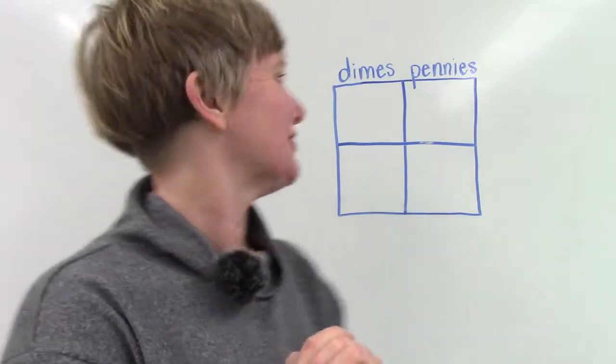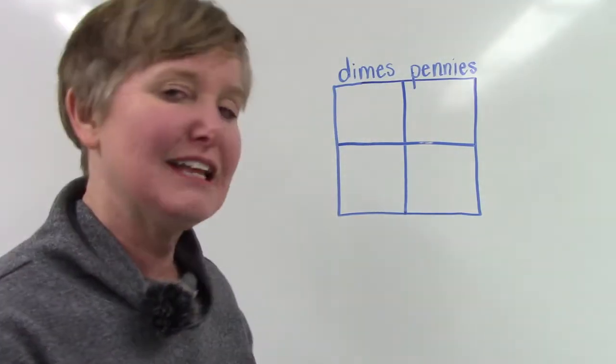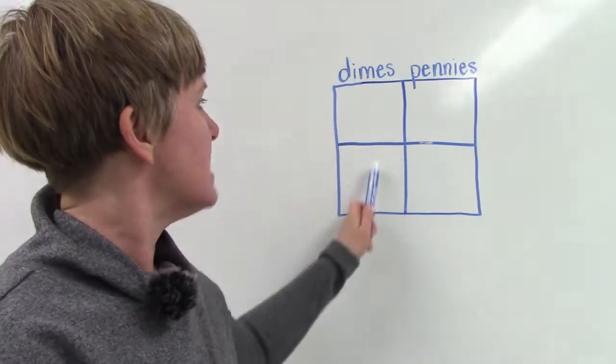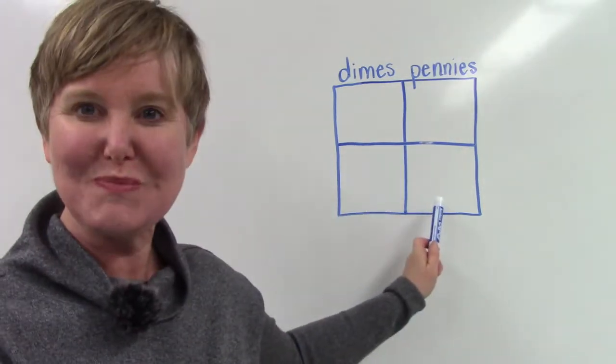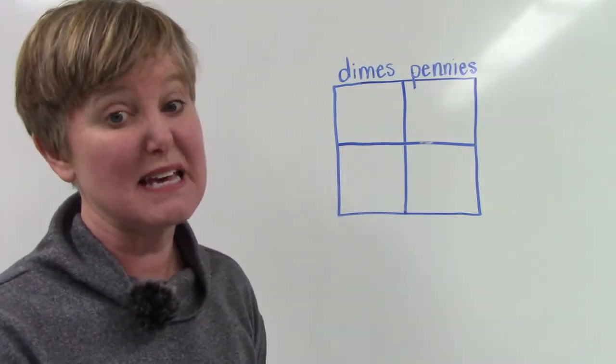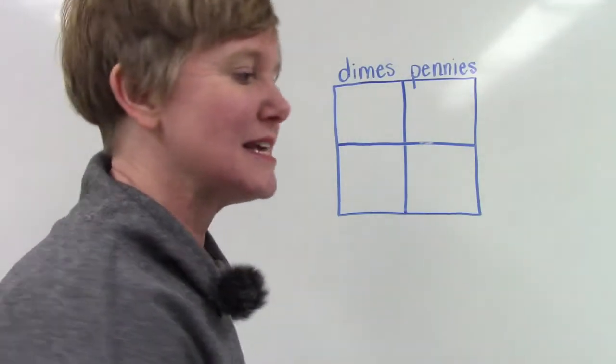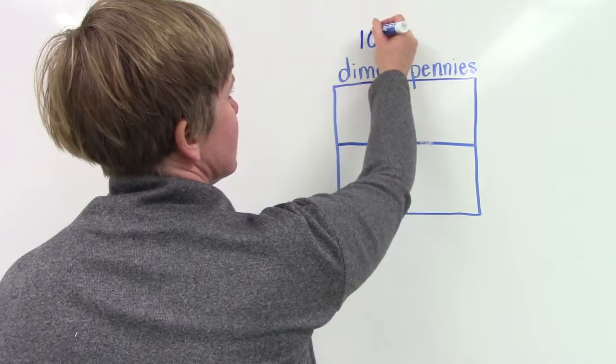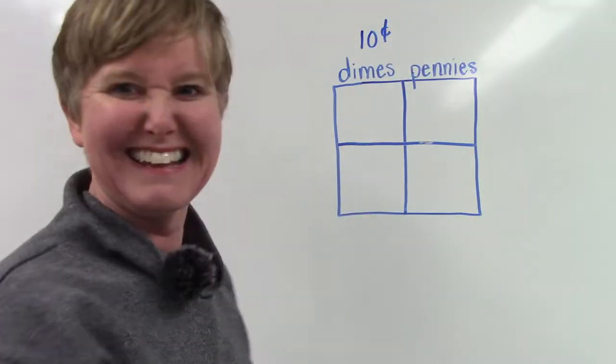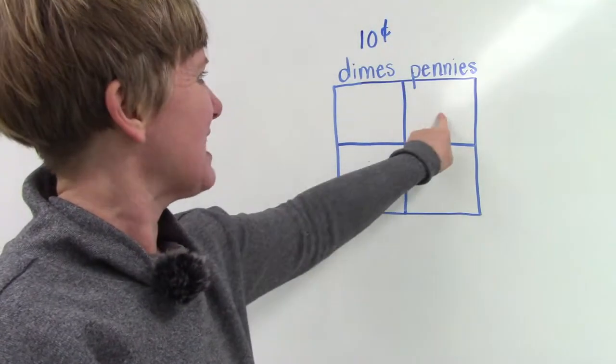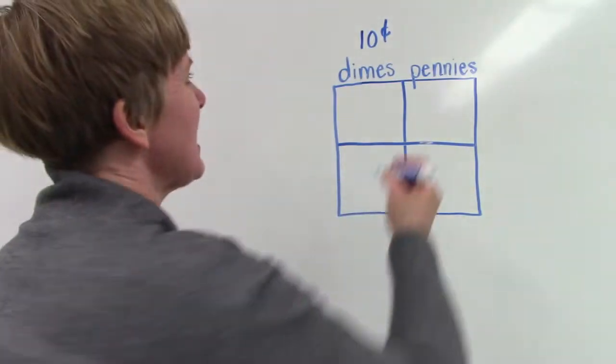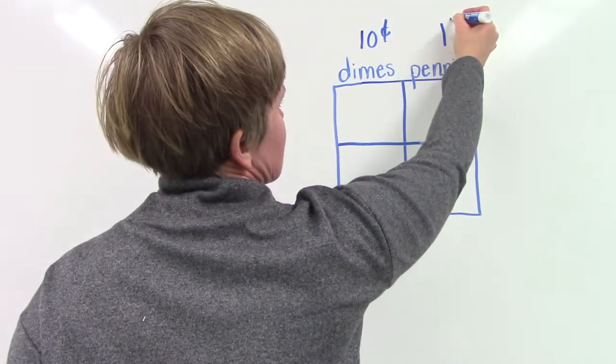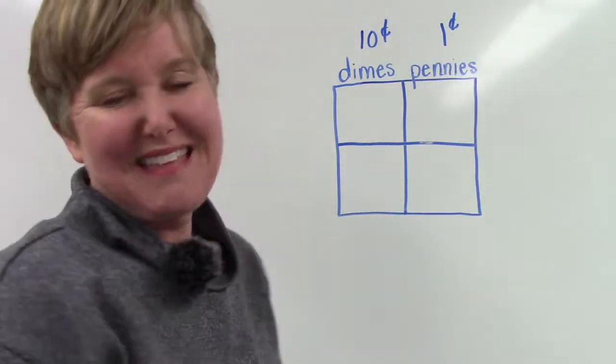Well, let's take a look. Here I have a little graph and we have dimes on this side and pennies over here. We have dimes first because they're in the tens place. Do you remember that a dime is worth 10 cents? And then our next place is the pennies place because pennies are worth one cent and they're in the ones place.